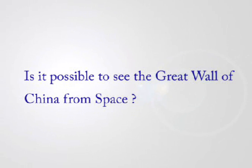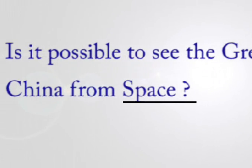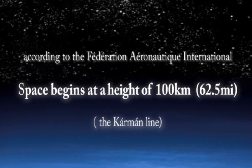Now let's get back to the original problem. First of all, we need to clarify what is meant by space. The officially accepted height of the boundary where the atmosphere stops and space begins, known as the Karman Line, is 100 kilometers, or 62.5 miles, above sea level.